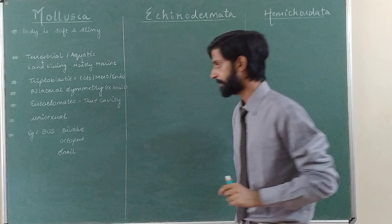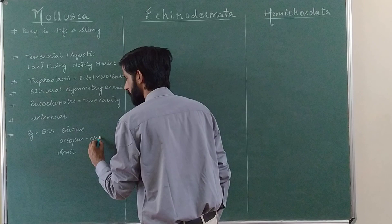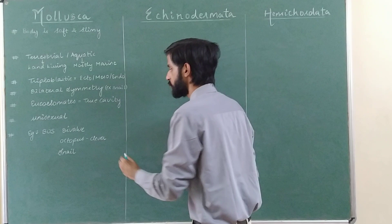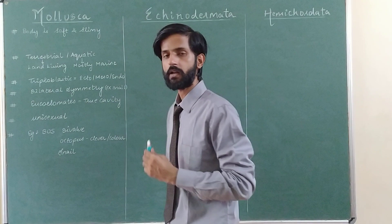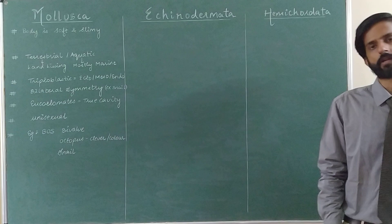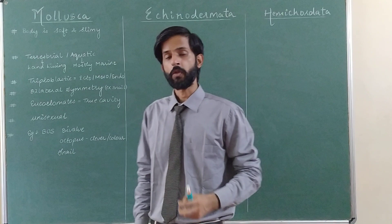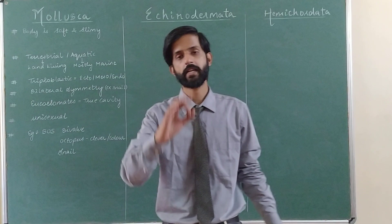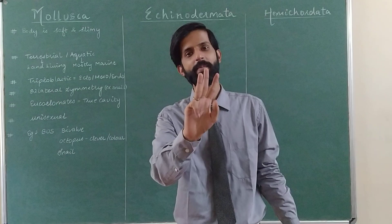Among these three examples, octopus is comparatively more clever. Octopus can change its color to camouflage its body. Octopus is carnivorous and its actual name is devil fish. It also has multiple feet-like projections which help it show three types of movement: walking, creeping, and swimming.